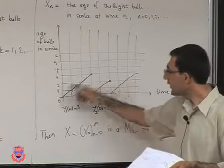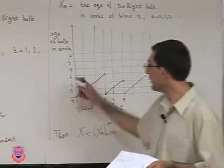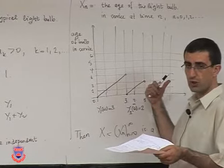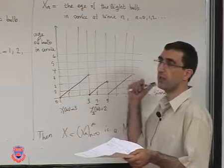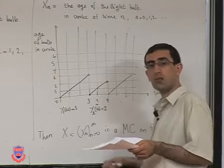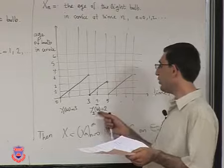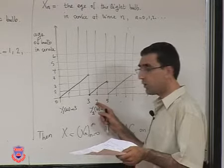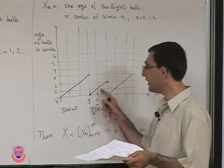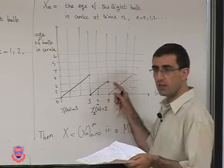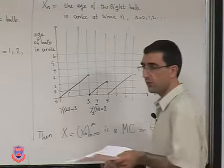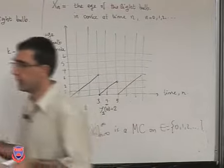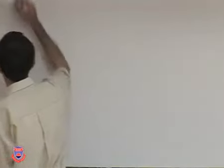Because the lifetimes of the bulbs in the past and in the future are all independent of each other, knowing anything about the ages of failed bulbs in the past will not provide any information about the future. You need to remember the age of the bulb currently in service because if it doesn't fail, that immediately suggests the likelihood that it will survive one more period. We can then derive the one-step transition probabilities.